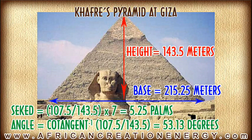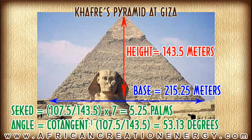Many of the pyramids at Giza in Egypt have a Seqed of roughly 5 — with 5.25 and 5.5 being fairly common — which are equivalent to angles in the 50-degree range. Imhotep's Step Pyramid, by comparison, was roughly 45 degrees with a Seqed value of 7 palms.